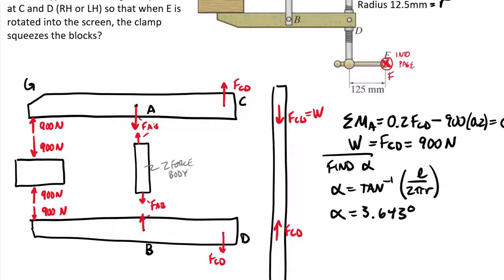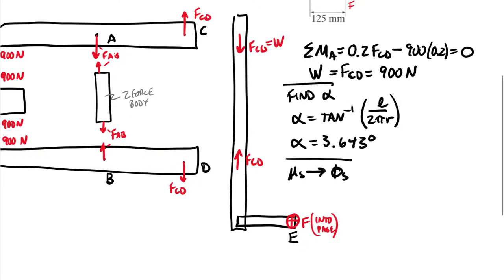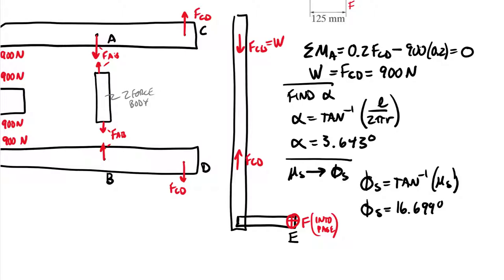Next we compute the friction angle. We were given μ_s, but for screw problems we convert that into φ_s using the relationship: φ_s = arctan(μ_s). Plugging in 0.3 and taking the inverse tangent, we get a friction angle φ_s of 16.699 degrees.